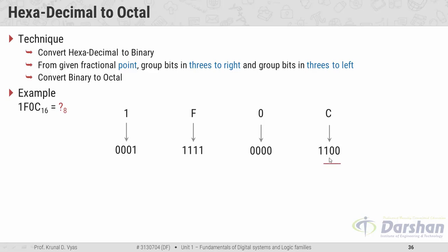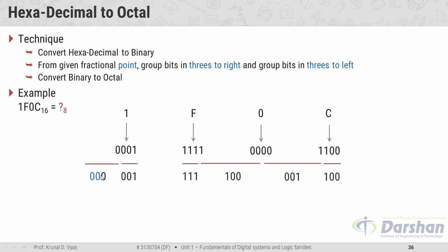The first group is 100, the second group is 000, the third group is 100, the fourth group is 111, and the fifth group is 001. We are left with one zero at the front, so we pad two zeros before it, making it 000. The final binary groupings are ready, and for the last step we convert each three-bit binary group to an octal digit using the binary to octal table.